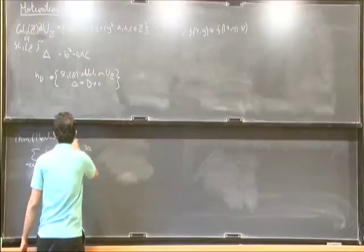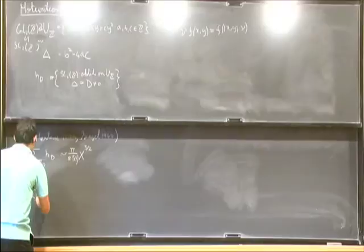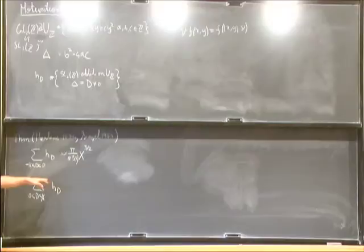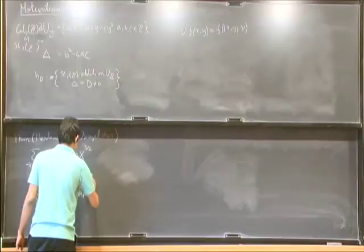The case of positive discriminant binary quadratic forms, the analogous question was answered by Siegel in 1944 quite a while later. He showed that suppose you sum d going between 0 and x of h_d, but here the natural thing turns out to be that you have to weight h_d with some other quantity which I will just call the regulator of d when d is square free. This grows as π²/(18ζ(3))·x^(3/2).